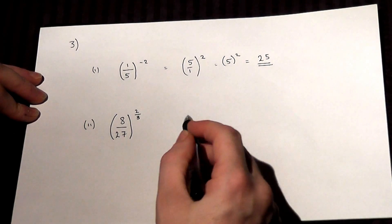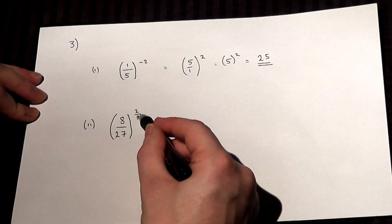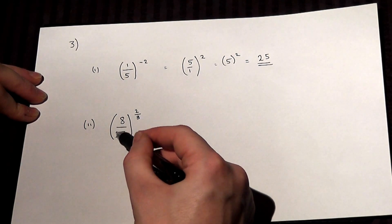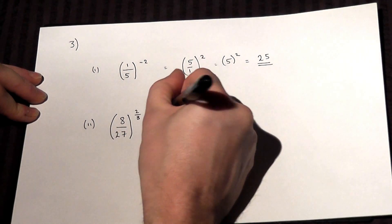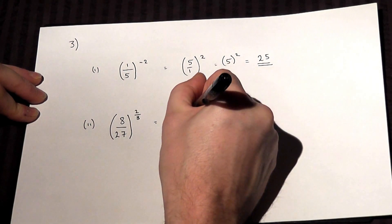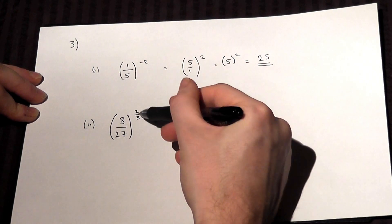The second part has a fractional power: (8/27)^(2/3). The method here is to think about this as two parts.